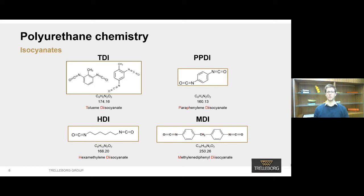The polyol component is reacted with isocyanates to produce the chemical reaction needed to synthesise a polyurethane. There are different types of isocyanates with pros and cons for the final polyurethane structure. For example, TDIs, which are on the top left of your screen right now, have excellent high temperature stability but are volatile and hazardous, so dangerous in modern industry. HDIs, which are on the bottom left of your screen, have excellent UV stability but are typically weaker with lower mechanical strength.